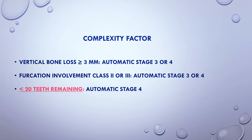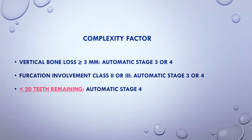These complexity factors make diagnosis easier. If you have vertical bone loss of 3 millimeters or more on a radiograph, it automatically shifts to Stage 3 or 4 — even if interproximal attachment levels are all 1s and 2s. Same with furcation: Class 2 or 3 furcation involvement is automatically Stage 3 or 4. If your patient has periodontitis and fewer than 20 teeth remaining, that's automatic Stage 4.